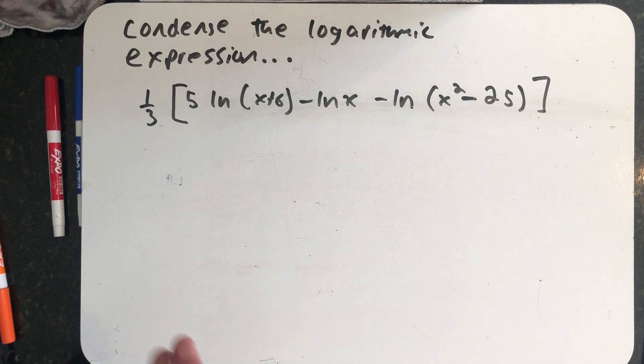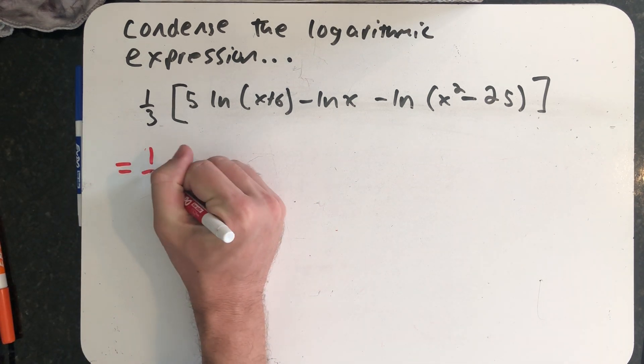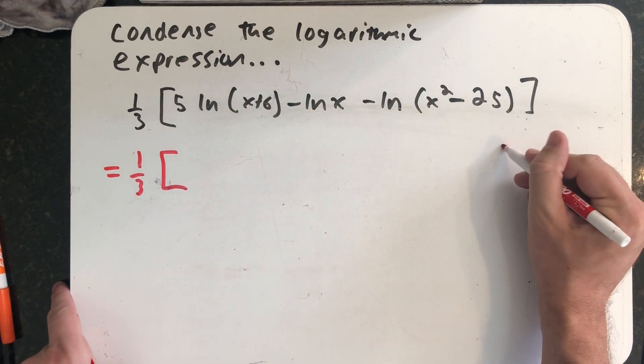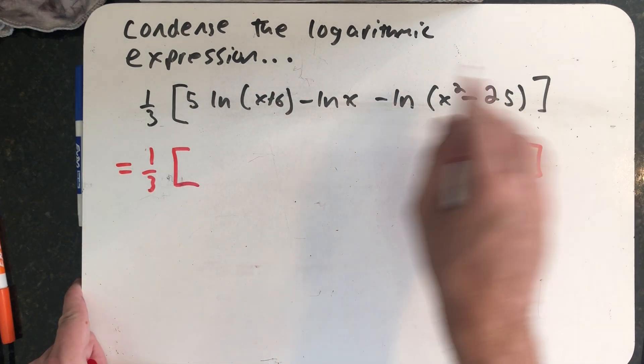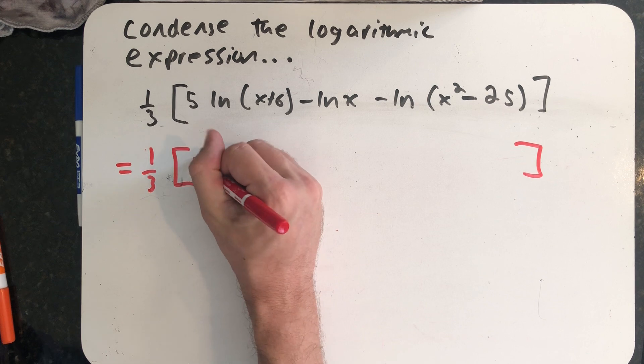There's actually more than one way to start a problem like this, but I'm going to start on the inside of these brackets. So the expression I'm given is equal to one third times, and I'm going to condense this using the properties of logarithms. The first thing I'm going to do is move that power to the inside.